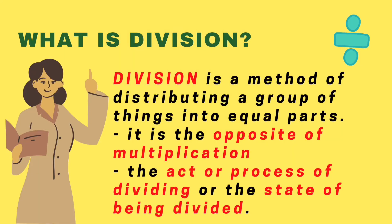What is division? Division is a method of distributing a group of things into equal parts. It is the opposite of multiplication, and it is also the act or process of dividing, or the state of being divided.